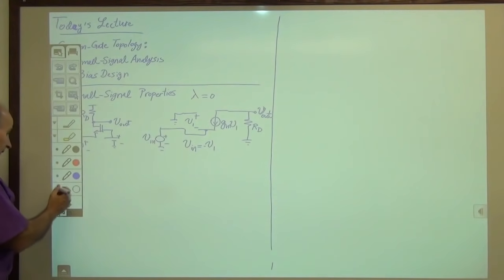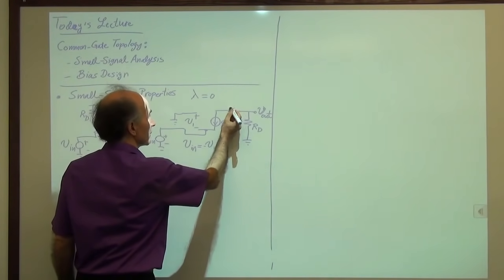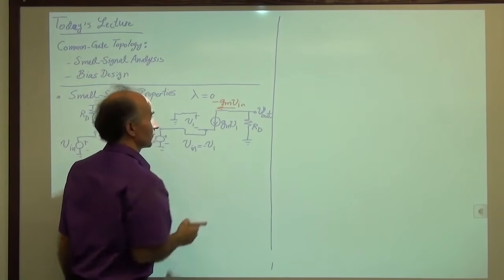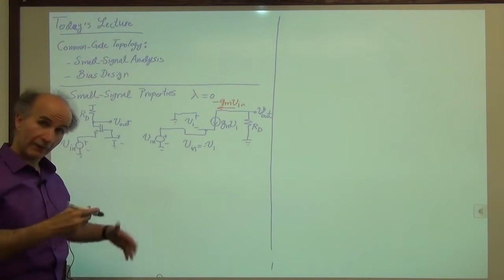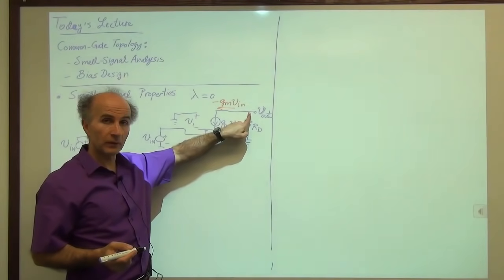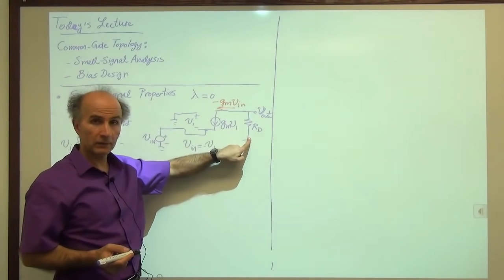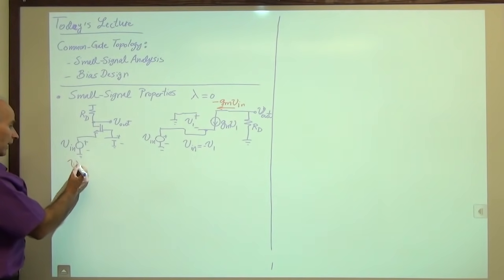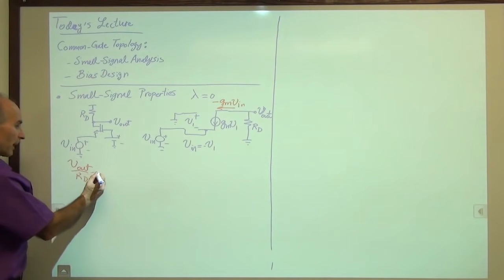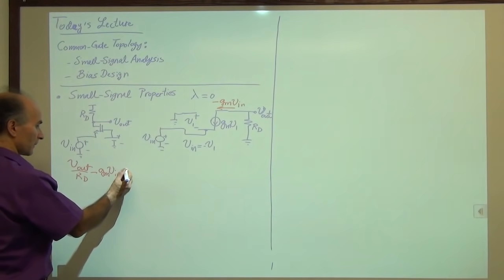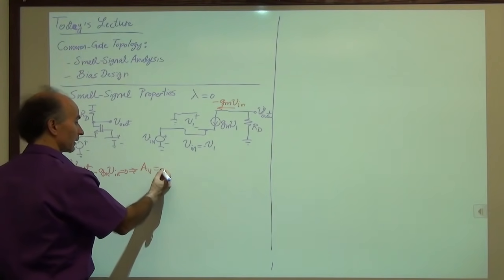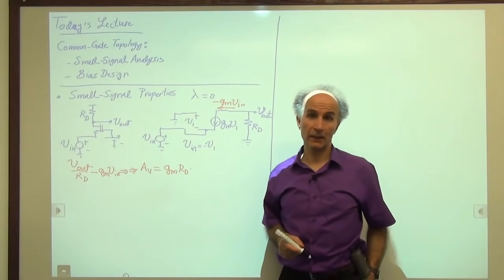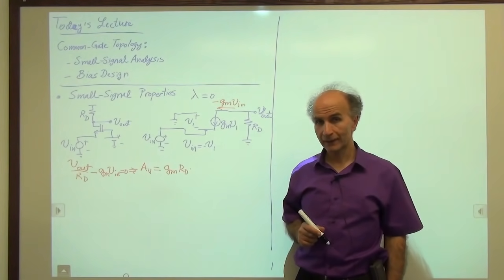That means that GmV1 flowing this way is equal to minus Gm times Vin. We have eliminated V1. Now we write a KCL at the output node, saying that this current plus this current must be zero. This current is the voltage across Rd divided by Rd. So we say Vout over Rd minus Gm times Vin must be zero. That means that the voltage gain of the circuit is given by Gm times Rd. It's very similar to the common source stage except that it's a positive gain. The stage does not invert as we saw qualitatively last time.